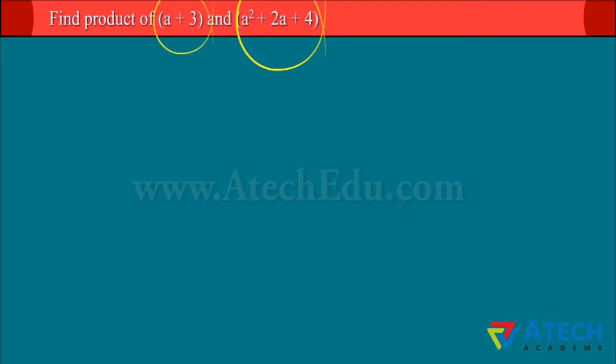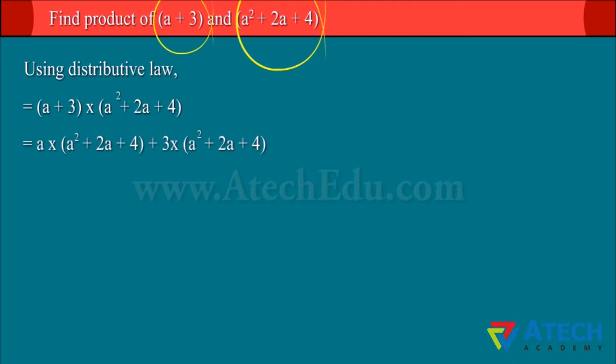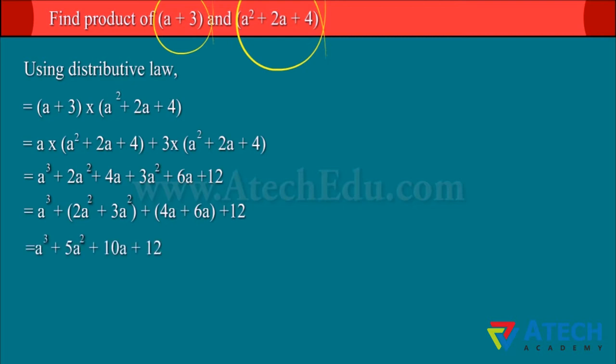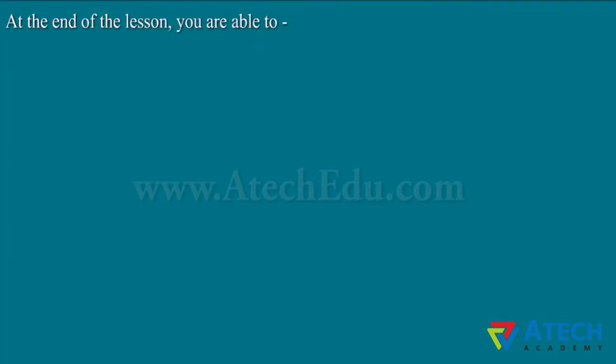When a binomial is multiplied by a trinomial, like in this example, each of the 3 terms in the trinomial is multiplied by each of the 2 terms in the binomial. Hence, we shall get 3 × 2 = 6 terms, which may reduce to 5 or less terms by combining like terms.